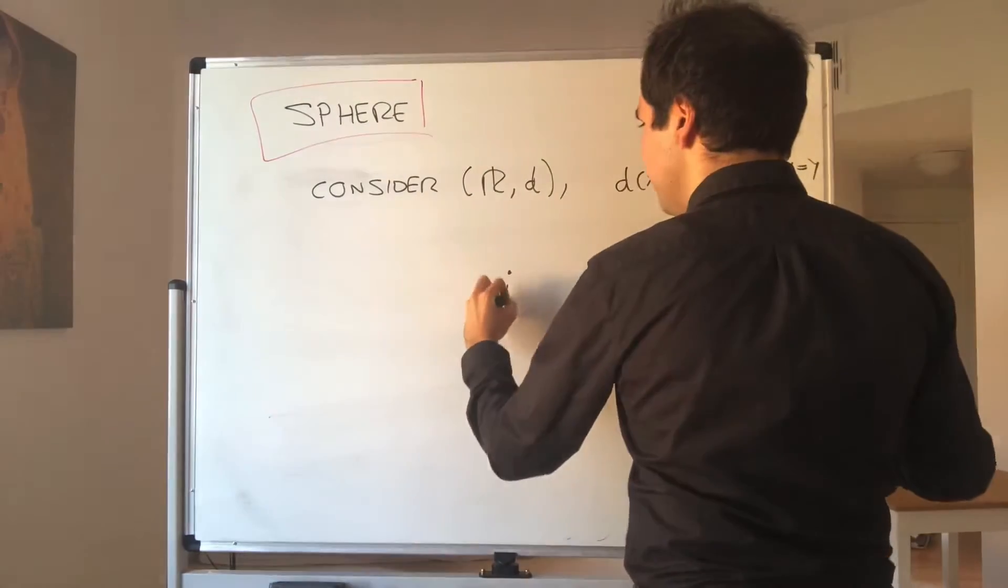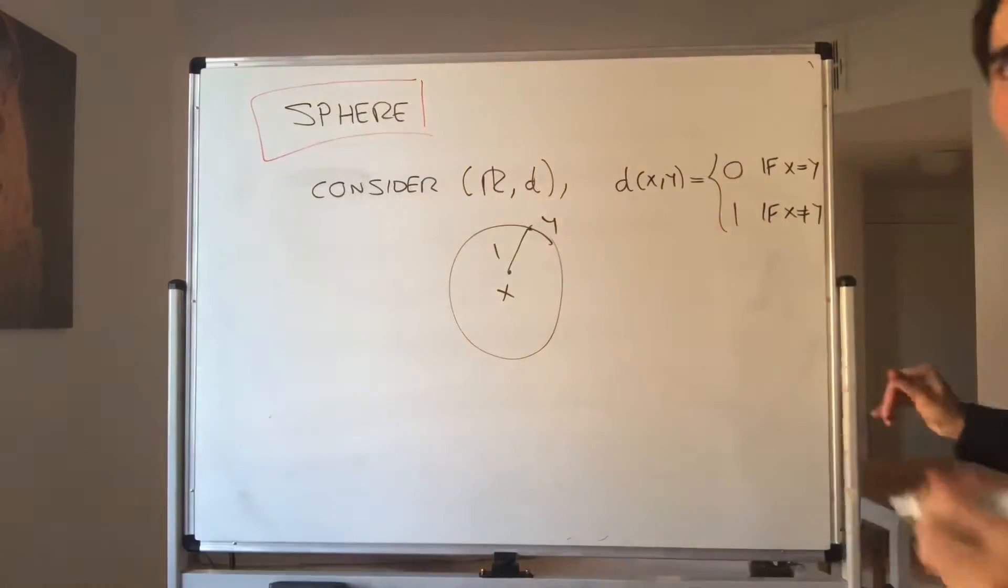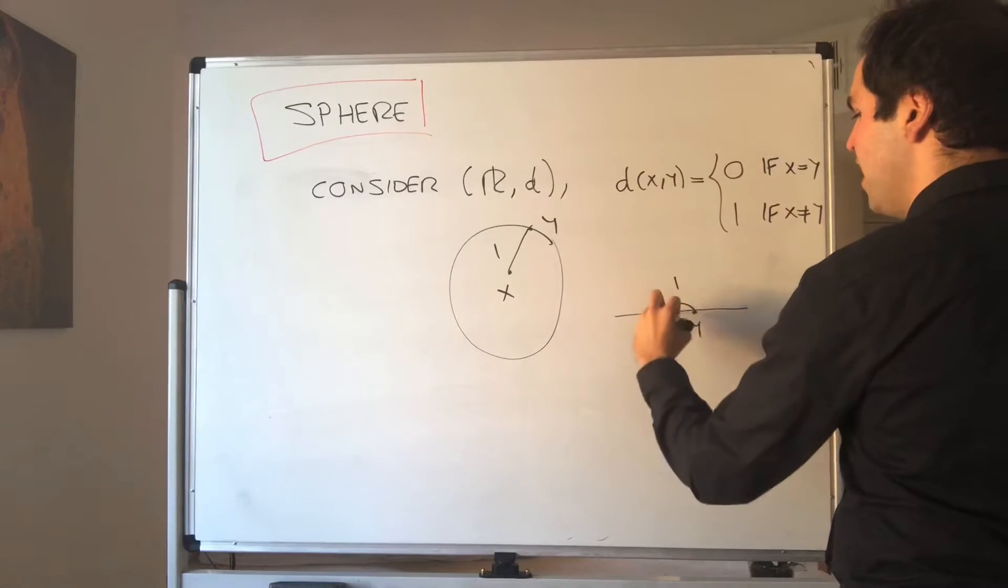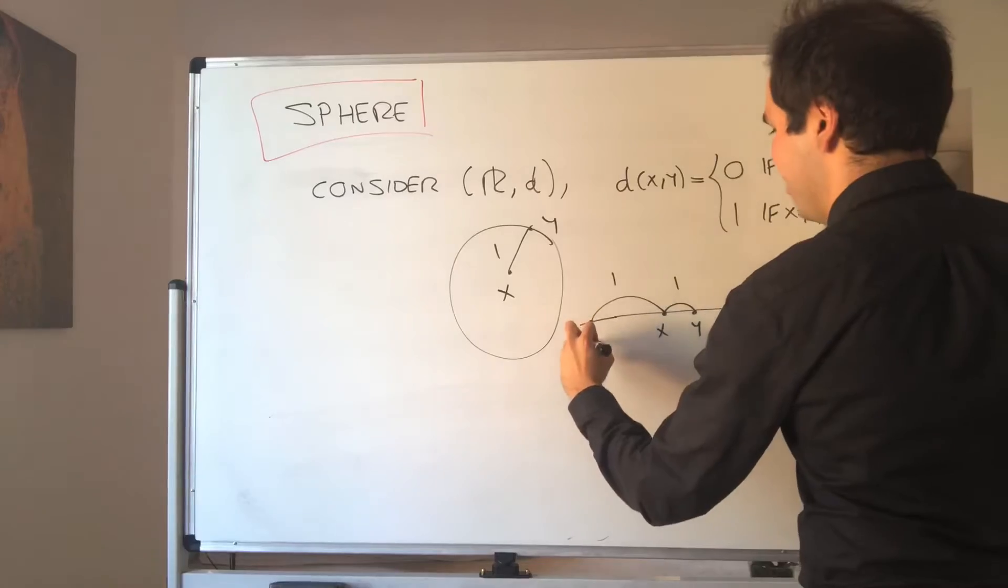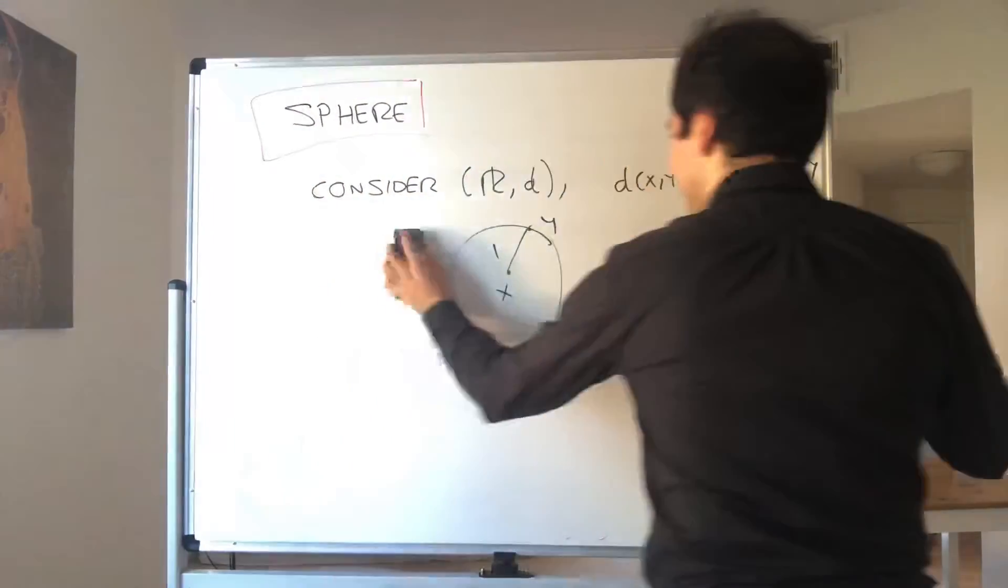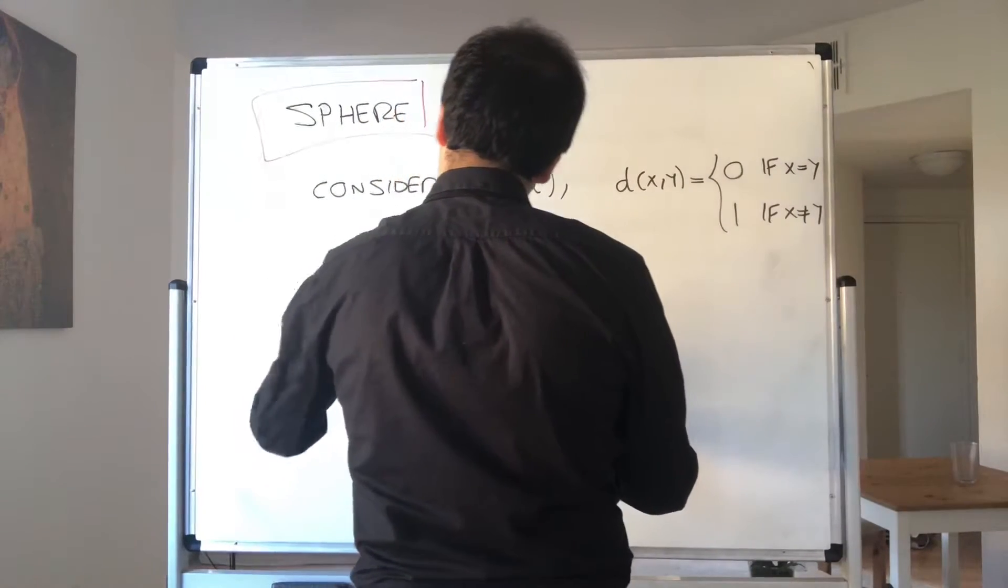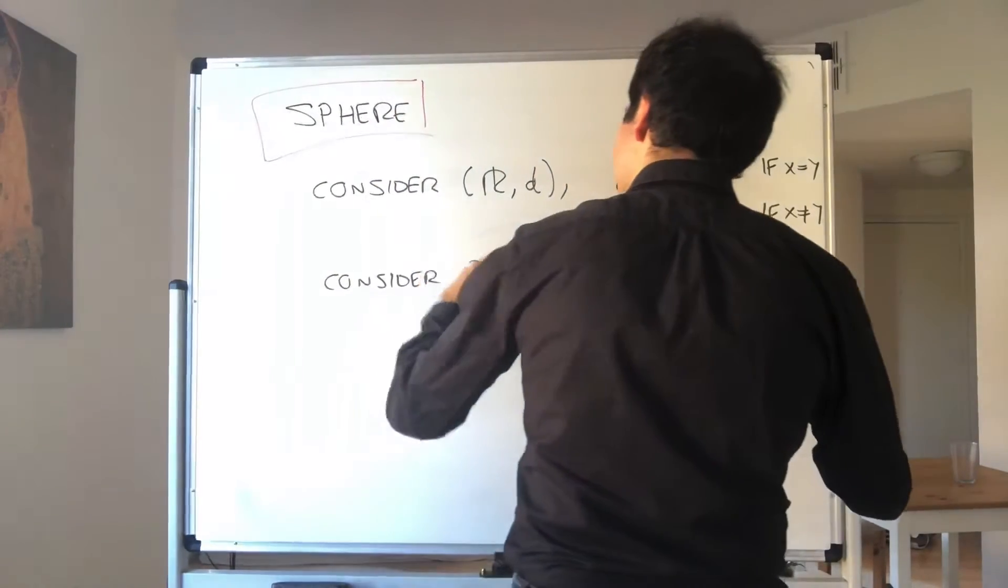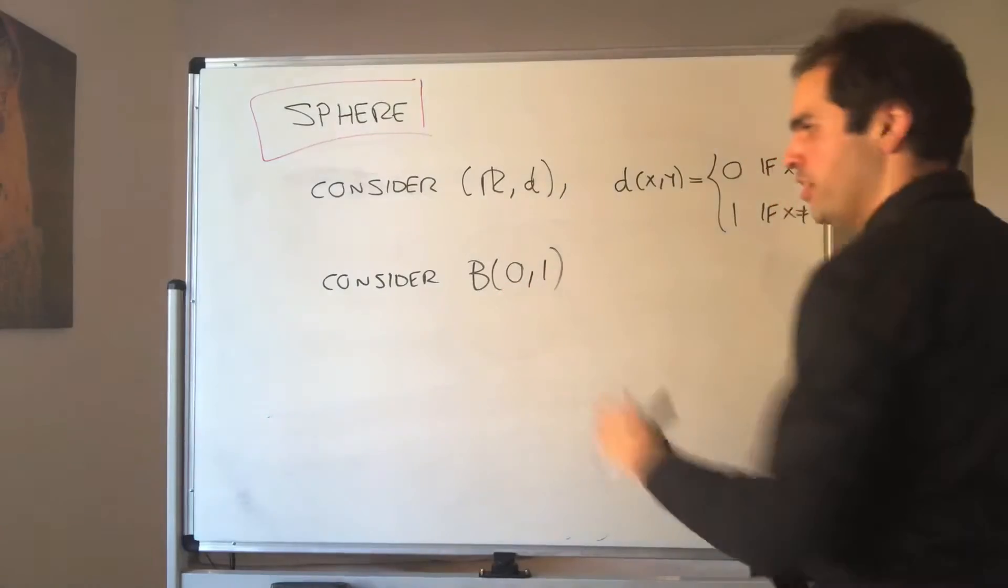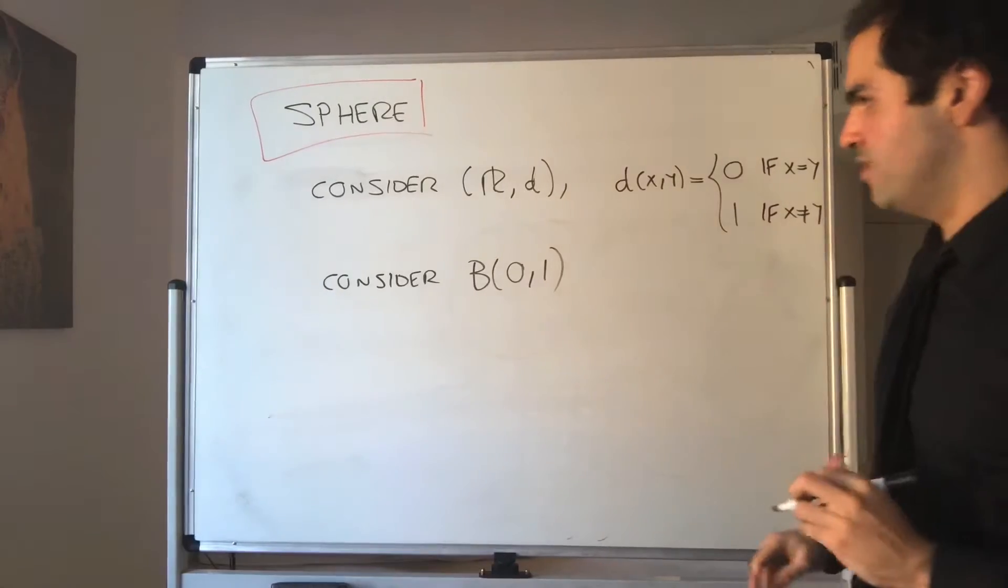In other words, anything different from x is exactly one away from x. So in some sense, what you're saying is every point that's not x, it's exactly one away. Weird, huh? It's kind of hard to imagine this way, but I'm claiming that this is a counterexample because let's consider this thing, the ball centered at zero and radius one. And I want to show that the sphere centered at zero and radius one isn't the same as the boundary of the ball of radius one.